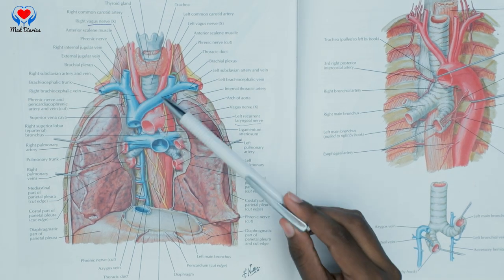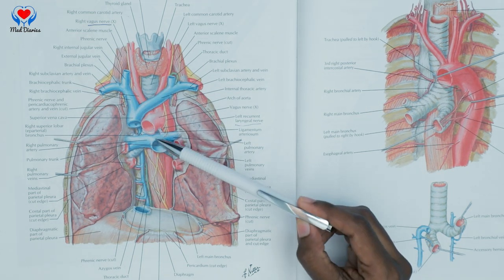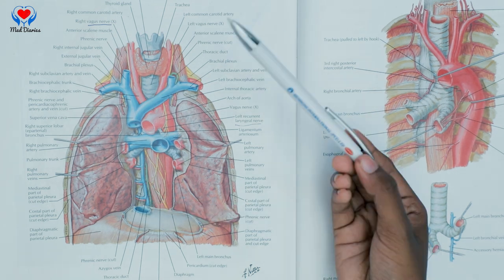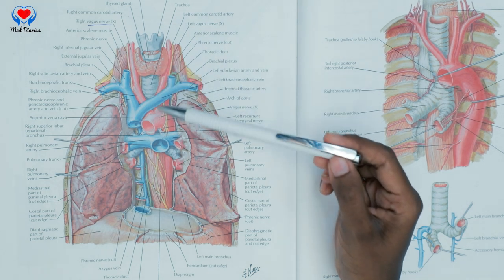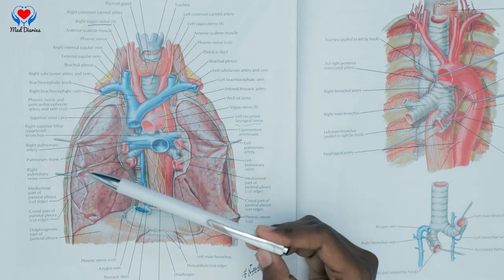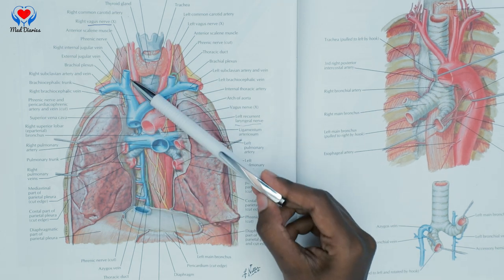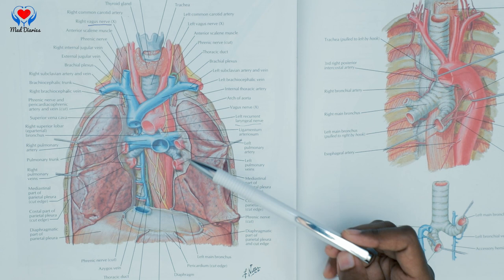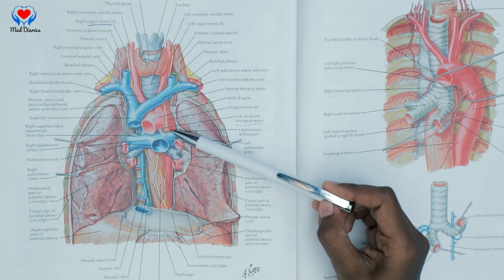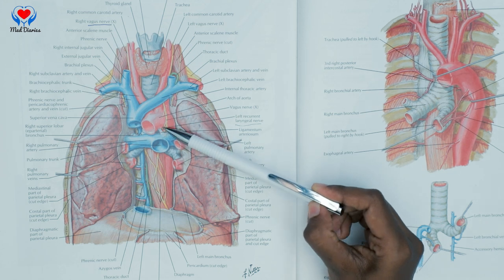Now, the thoracic part of the esophagus. Anteriorly: a small part of the trachea, the left main bronchus, the right pulmonary artery, and the pericardium with the left atrium. Posteriorly: the vertebral column, the thoracic duct, the azygous vein, and the descending thoracic aorta. On the right side: the right lung with right pleura, the right vagus, and the azygous vein. On the left side: the left lung with pleura, the arch of the aorta, the left subclavian vein, the thoracic duct, and the left recurrent laryngeal nerve.